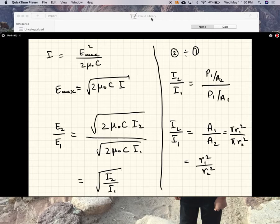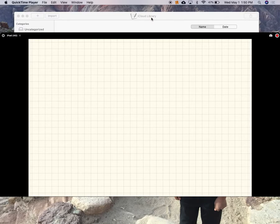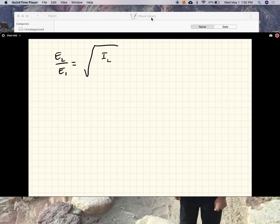So what we have here is the ratio of the electric fields, the ratio of the amplitude of the electric fields. E2 over E1 is equal to square root of R1 square over R2 square, which is R1 over R2.